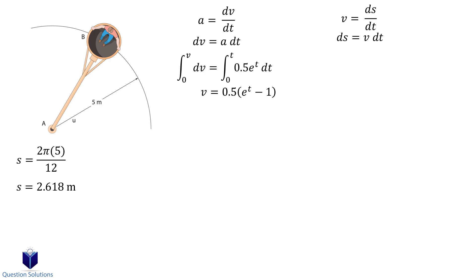Let's do another integral using the velocity equation we found earlier. The lower bounds for this integral are the following. The distance starts at 0 meters and goes to 2.618 meters. The time starts at 0 seconds. So our integral looks like this. Simplifying gives us this equation.